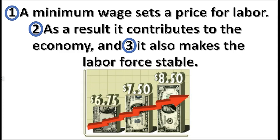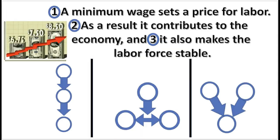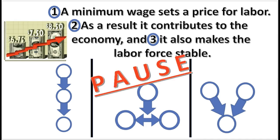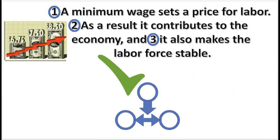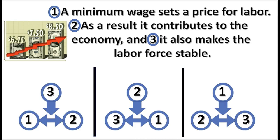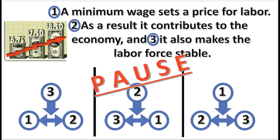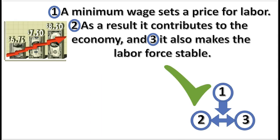Here is another practice problem. Look at this argument and choose the correct pattern. Press pause. That is correct — this argument has a multiple conclusion. Now choose the correct sequence of numbers in the argument. Press pause. That is correct: 2 and 3 form a multiple conclusion supported by 1.